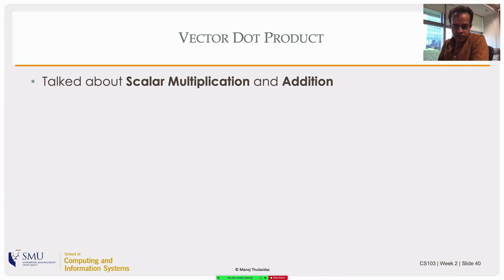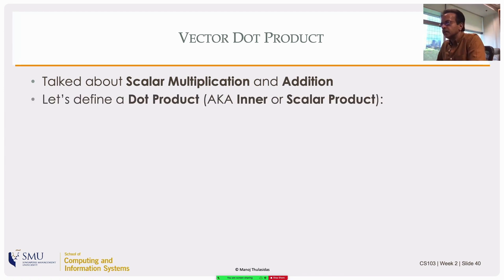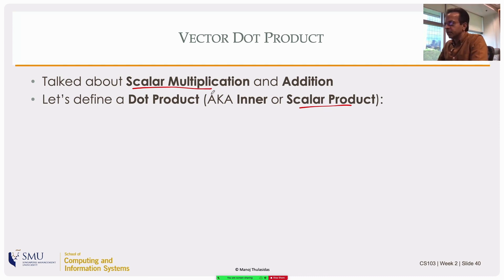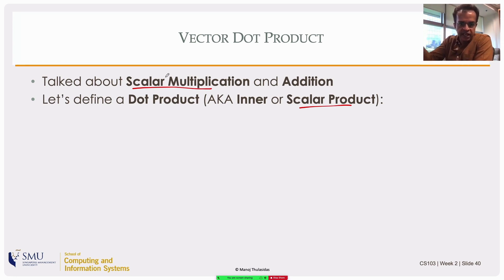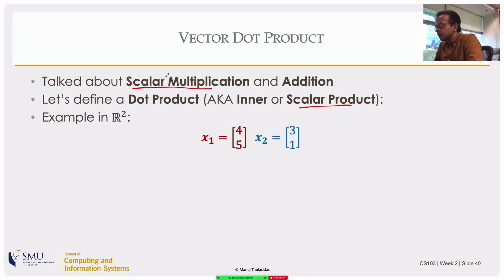We already talked about scalar multiplication, which is multiplying each element of a vector by a scalar, and addition, which is adding the corresponding elements of two vectors. Now let's define the dot product, also known as the inner product or the scalar product. The dot product is different from scalar multiplication — scalar multiplication multiplies a scalar with a vector to get a vector, while the scalar product multiplies two vectors to get a scalar.